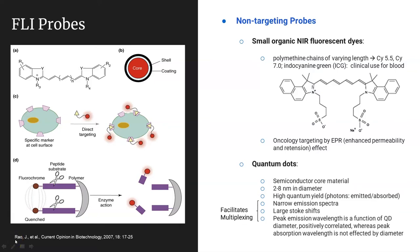Quantum dots are another class of fluorescent probes with unique features for in vivo optical imaging. The core of most quantum dots is a semiconductor material, coated with a material that allows for chemical conjugation of specific ligands to direct the quantum dot to a particular antigenic site inside your mouse model. Their size range tends to be between two and eight nanometers in diameter. They have a high quantum yield — their emitted-to-absorbed photon ratio is quite high — and they tend to be quite bright.